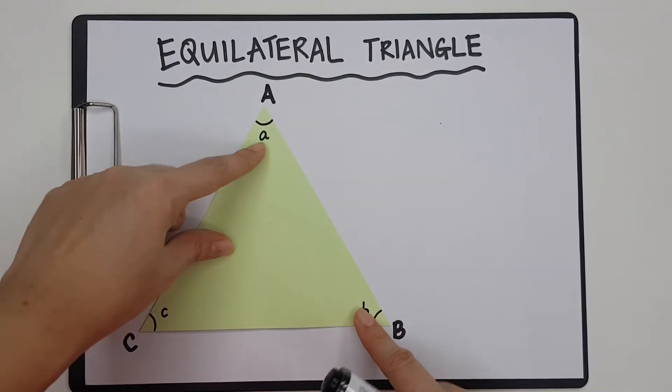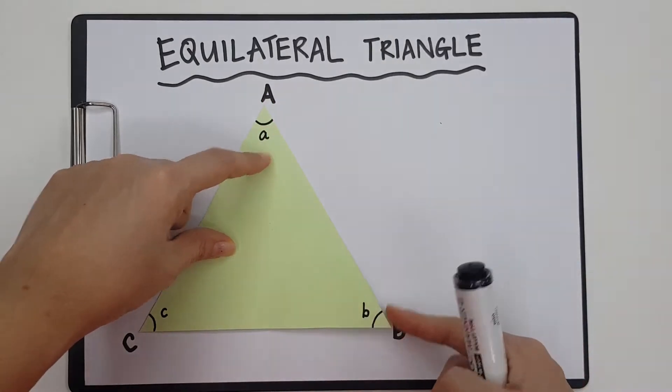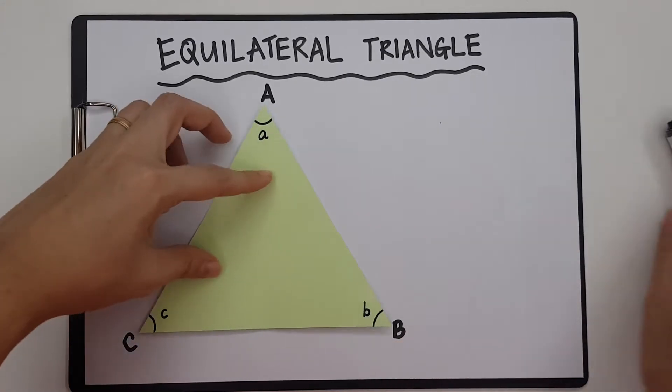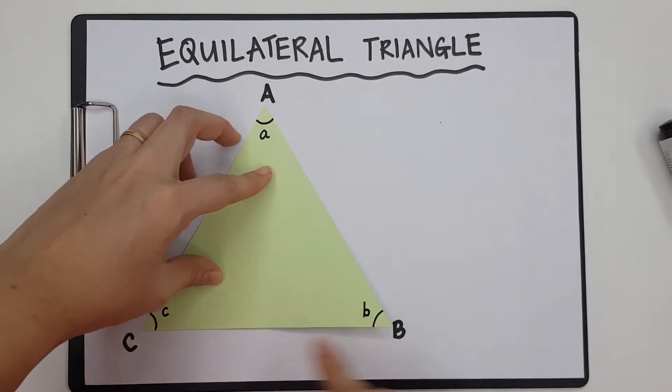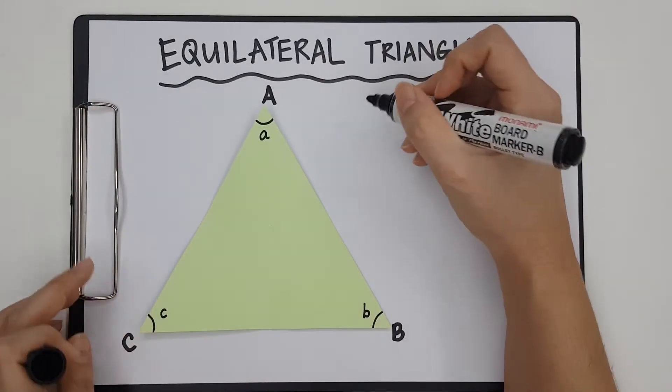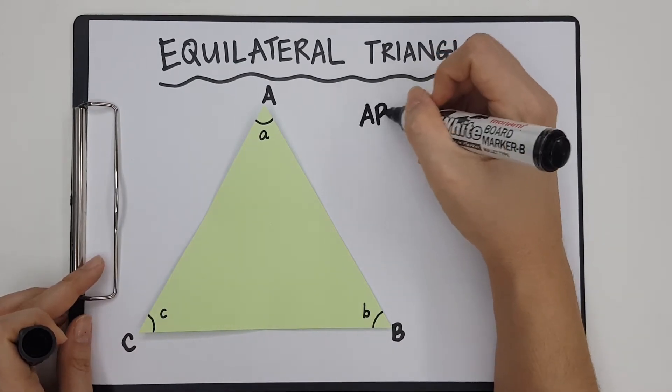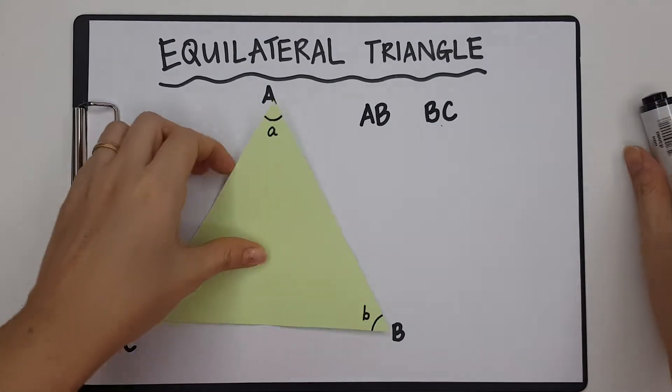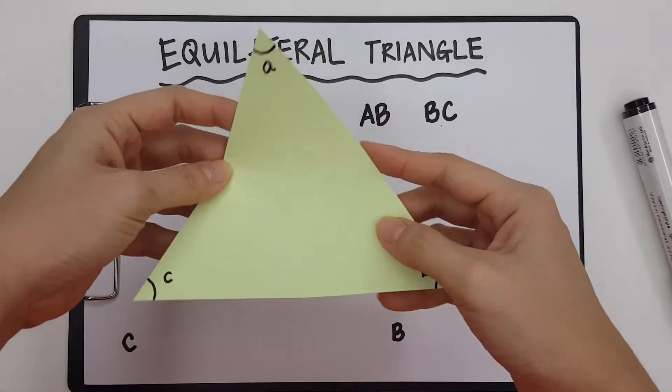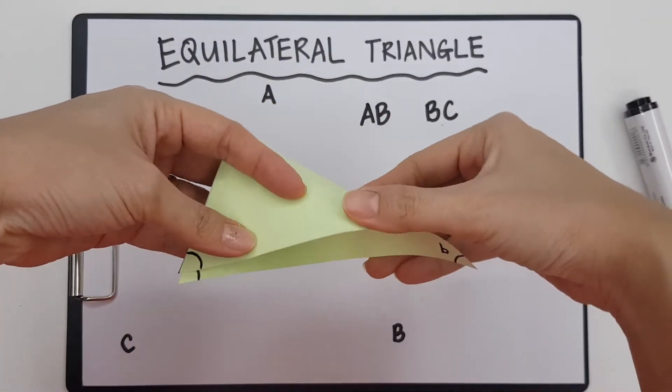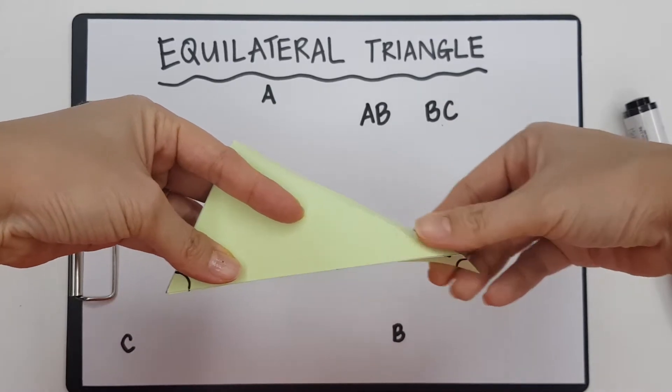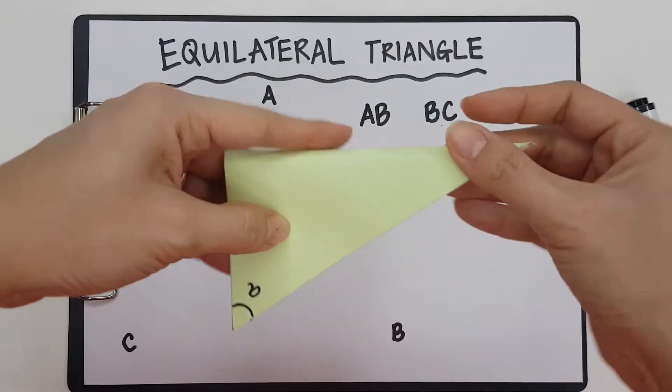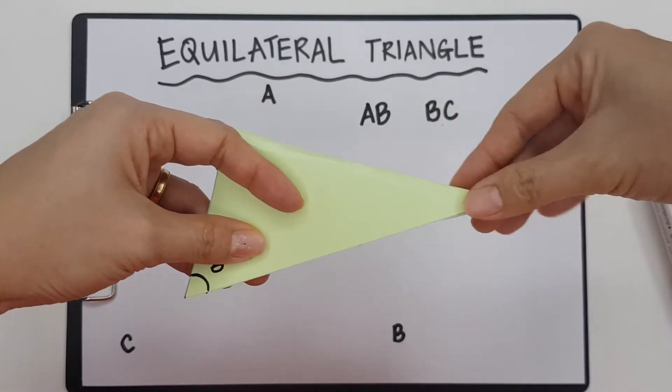And I'm going to see how AB and line BC are similar. So I'm going to compare it to BC. Here's what I'm going to do. I'm going to fold and match AB to BC. And as you can see, they are exactly the same length.